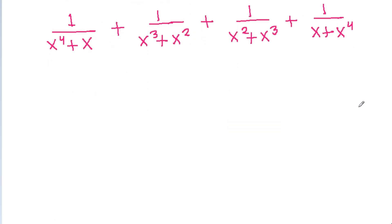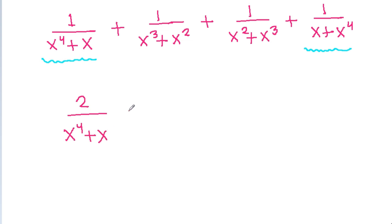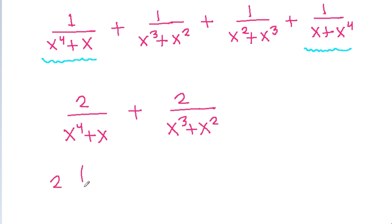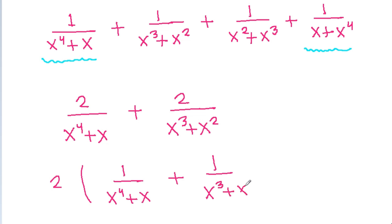We have 1 by x power 4 plus x appearing 2 times, so we get 2 by x power 4 plus x. And 1 by x cube plus x square also appears 2 times, so we get 2 by x cube plus x square. Taking 2 common, we get 2 times the quantity 1 by x power 4 plus x, plus 1 by x cube plus x square.